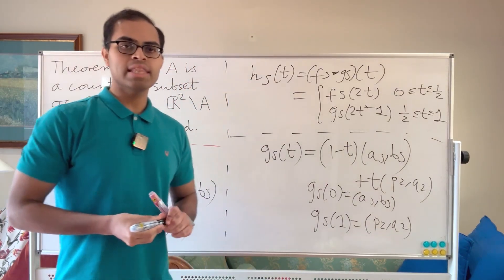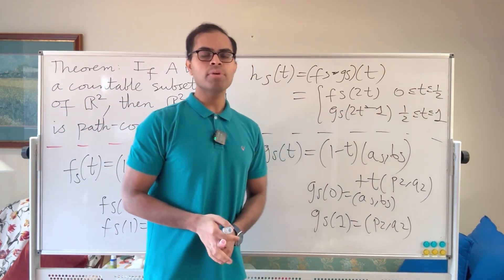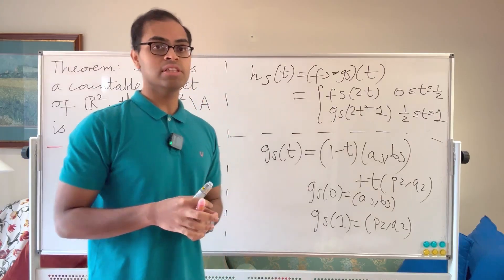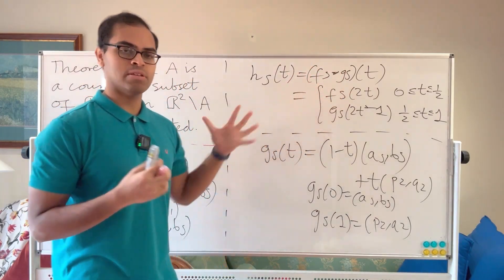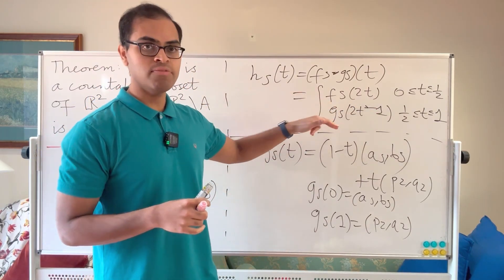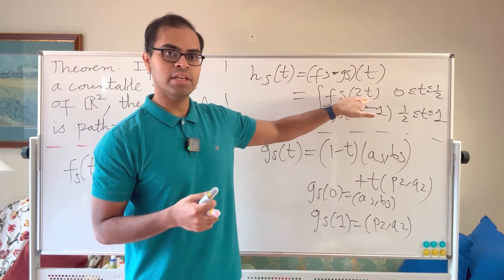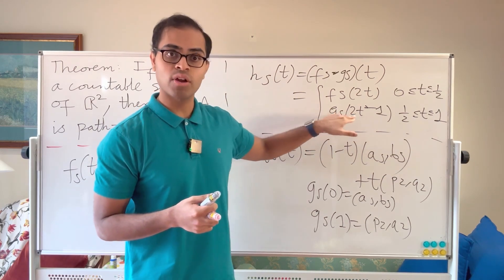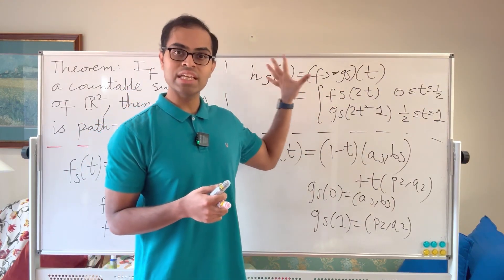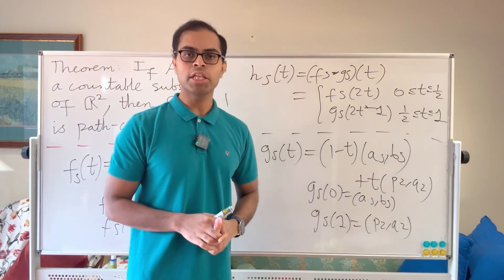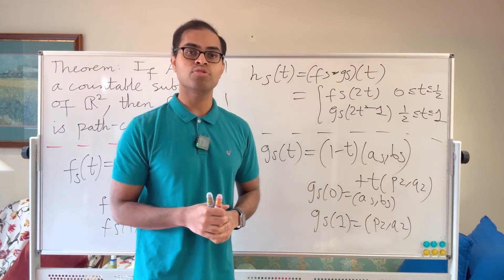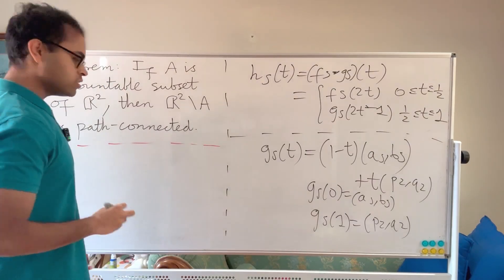The important point is that hs is continuous because it's piecewise defined and the pieces match at t = 1/2: fs(2·(1/2)) = fs(1) = (as, bs), and gs(2·(1/2) - 1) = gs(0) = (as, bs). The end point of fs equals the initial point of gs, so they match — this is the Gluing Lemma in topology. Therefore hs is continuous and connects (p1, q1) to (p2, q2).